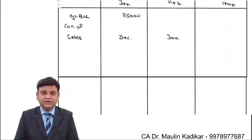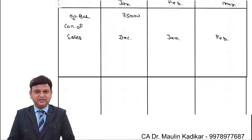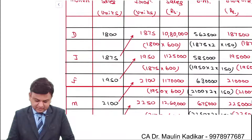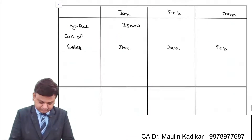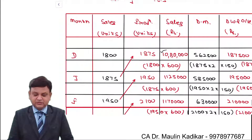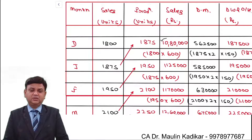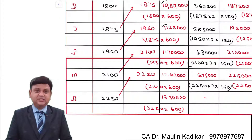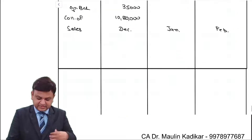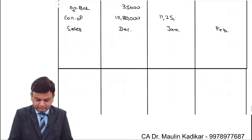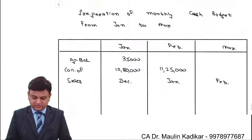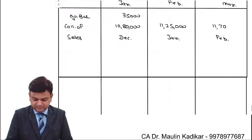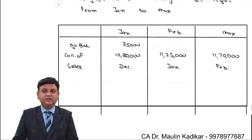Sales for the month of December is 10,80,000 and January is 11,25,000 — that is collected in February. Sales of February is 11,70,000, which will be collected in March. That is the way we will have the collection of the sales.